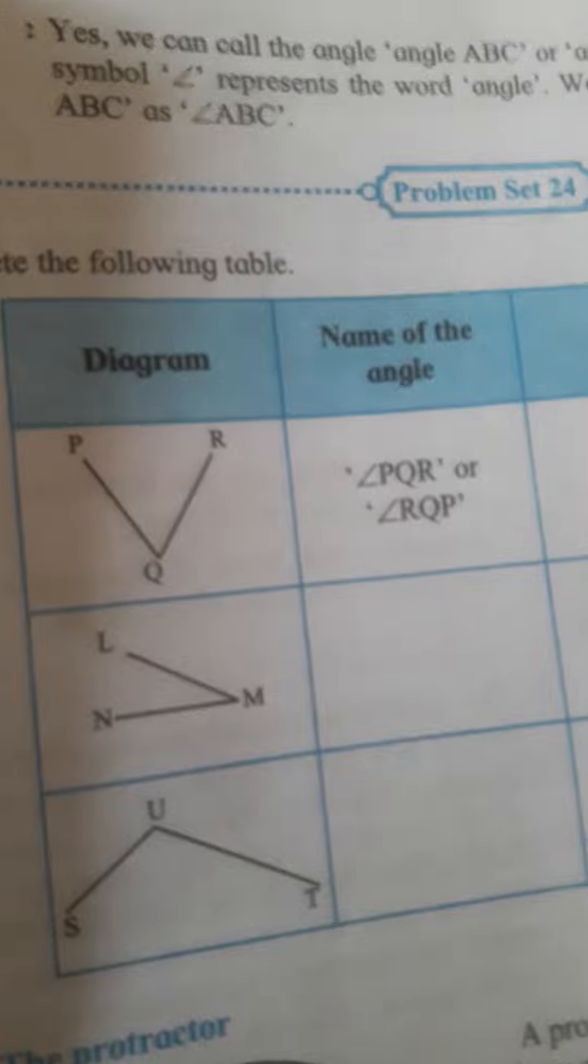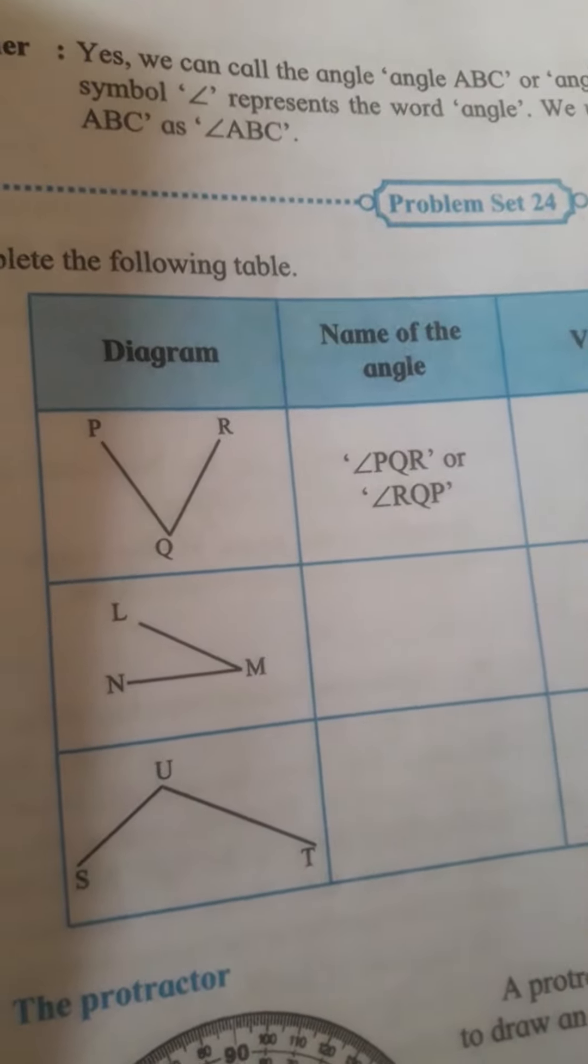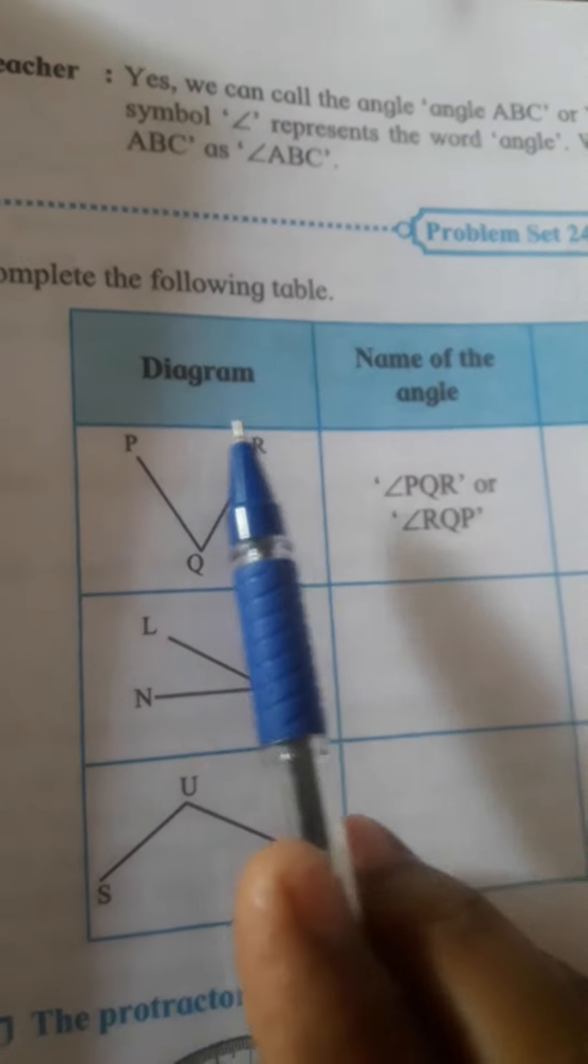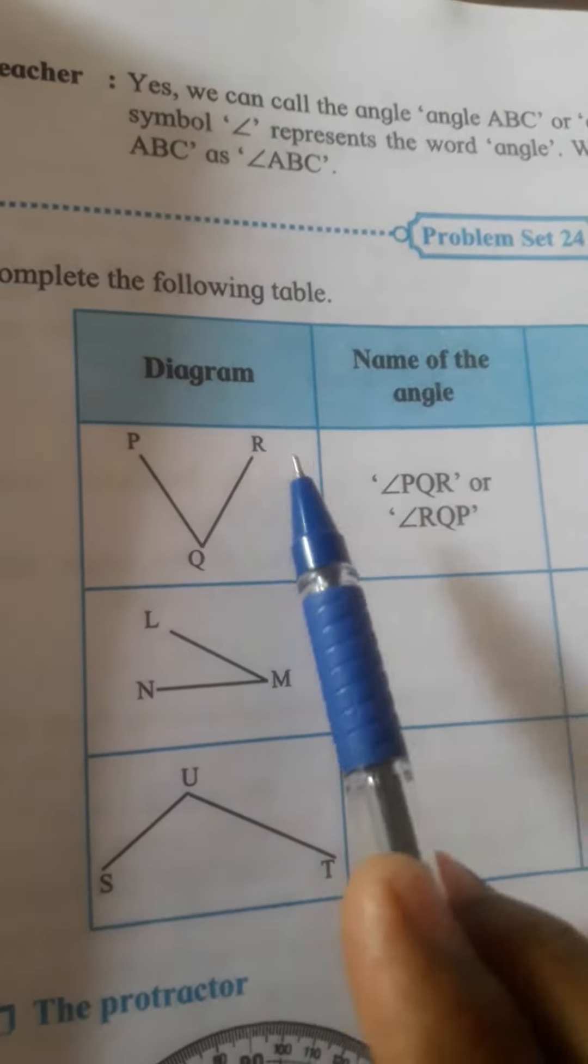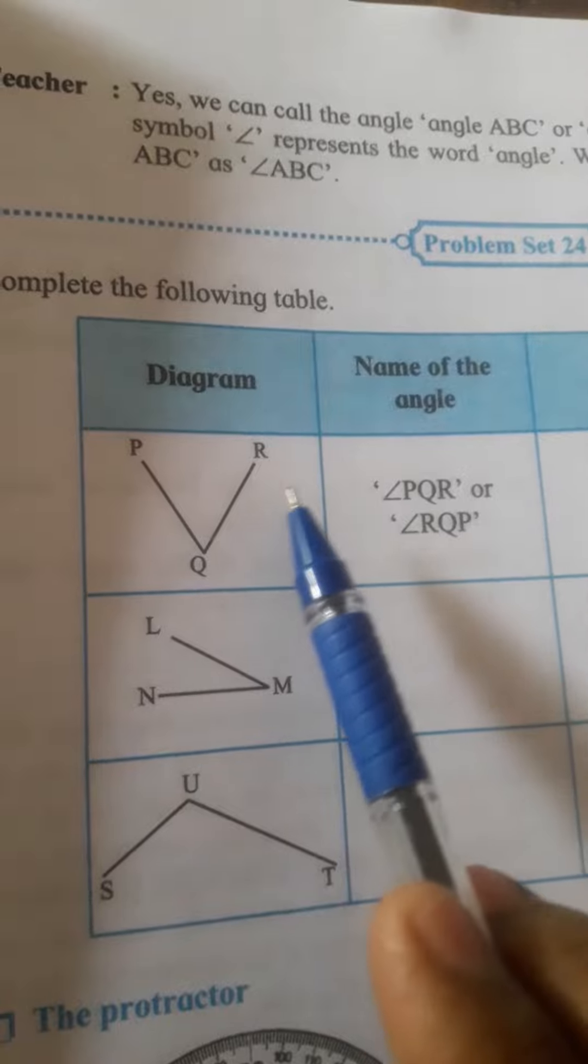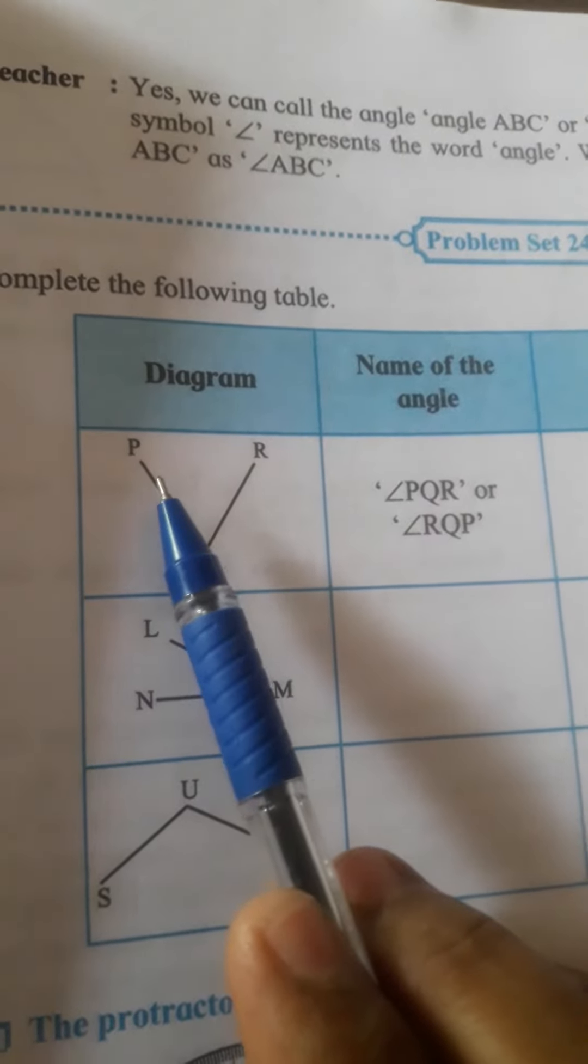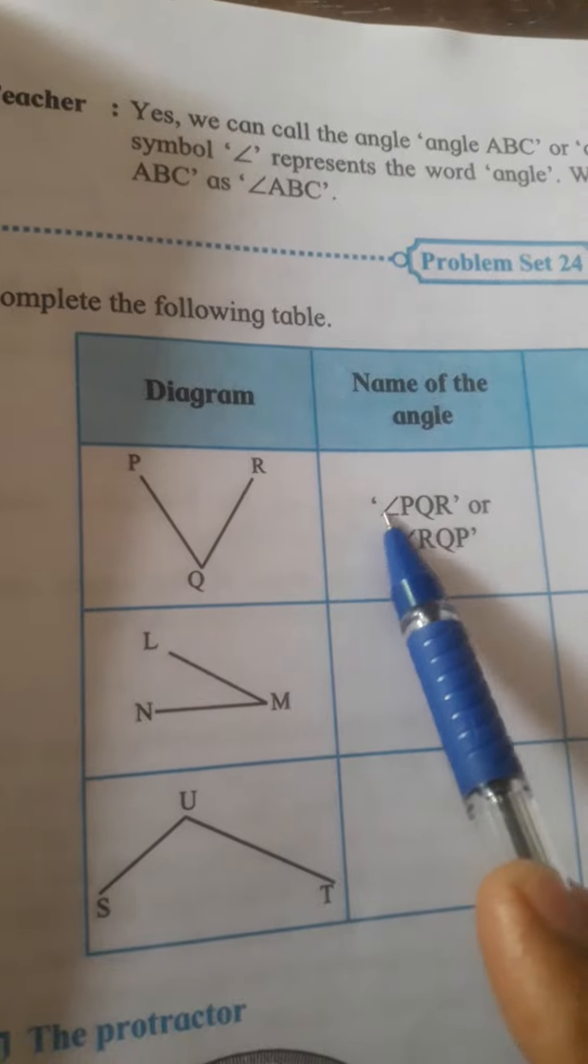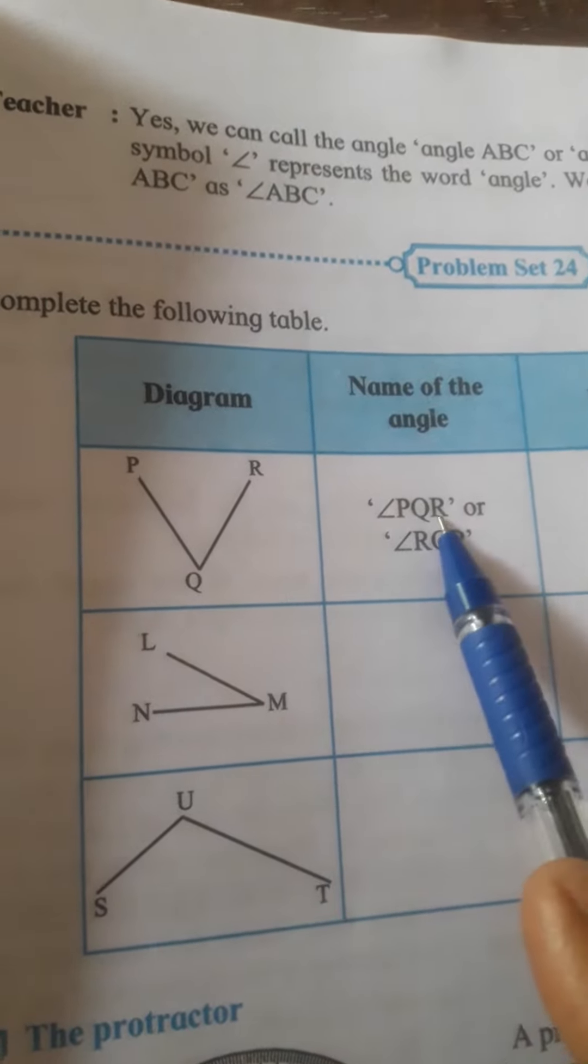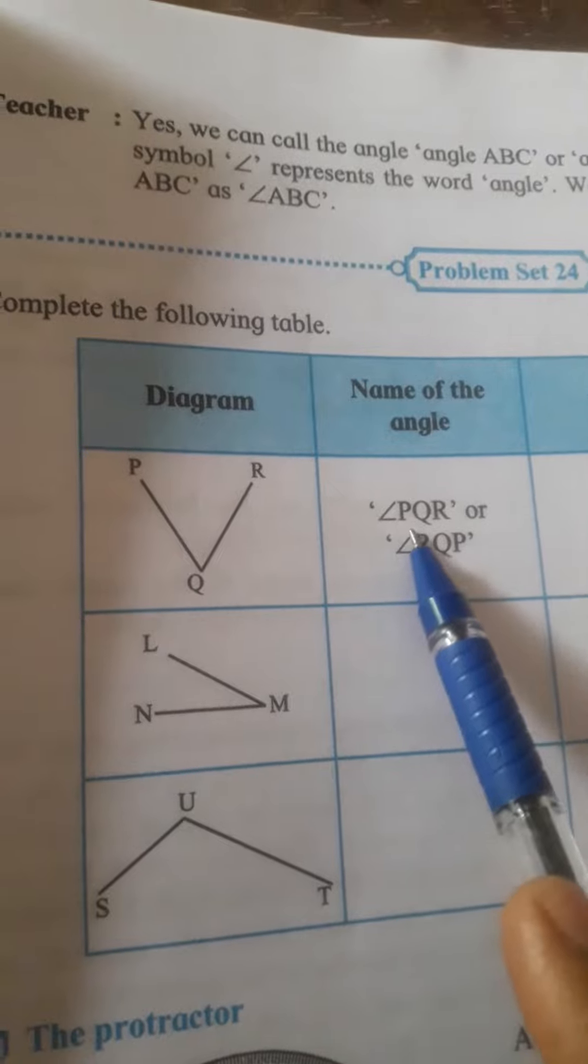See here in problem set 24, there is a given diagram PQR. This is the angle, and the name of the angle we read in both ways. We denote it as angle PQR or we give the symbol angle RQP.